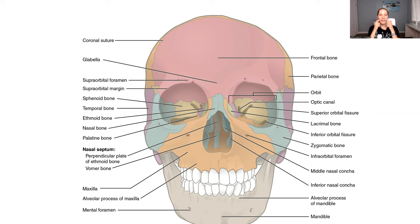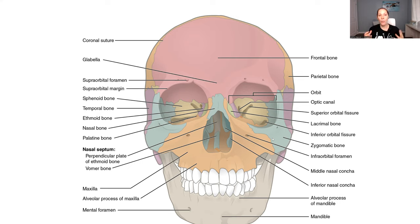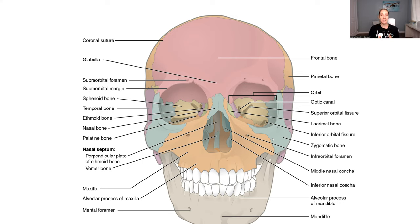Obviously the maxilla — you have to know that bone does not move. The mandible is the movable bone. Sometimes on the board exam they're going to ask which one is movable. The mandible is movable, not the maxilla. When we give a patient a night guard, it's typically for the top teeth because the maxilla doesn't move. But for somebody who has TMJ issues, the night guard goes on the bottom. So it does make a difference if the bone is movable or not.